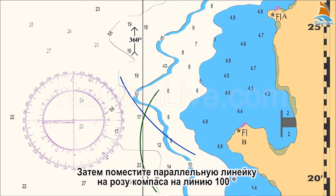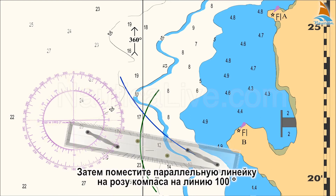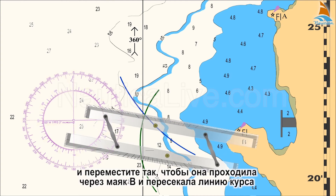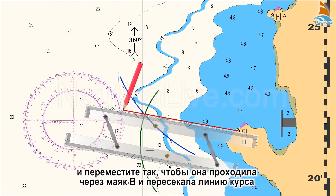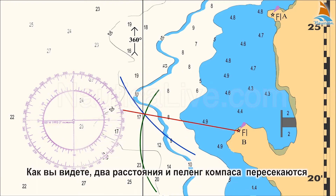Then place the parallel ruler on the compass rose on the 100 degree line and transfer that line passing from Lighthouse B and crossing the course line. As you can see, the two distances and the compass bearing intersect.